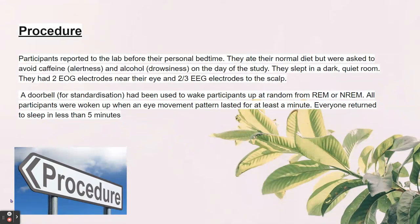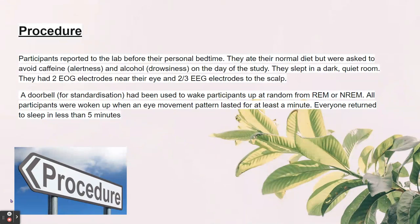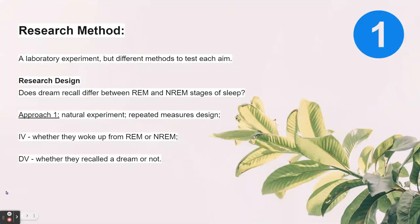For the procedure, participants reported to the lab before their personal bedtime. They ate their normal diet but were asked to avoid caffeine and alcohol on the day of the study. They slept in a dark, quiet room with two EOG electrodes near their eyes and two to three EEG electrodes on their scalp. A doorbell was used to wake participants up at random from REM or non-REM. All participants were woken up when an eye movement pattern lasted for a minute, and everyone returned to sleep in less than five minutes.